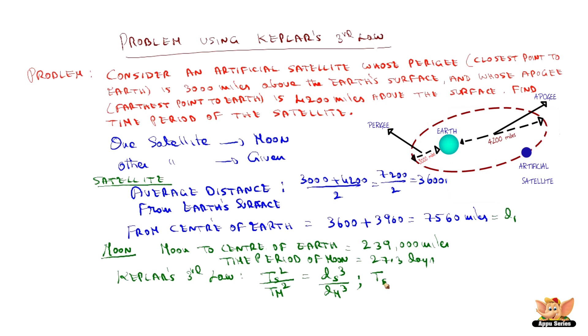what we will get? Ts square is equal to, what is the ds? That's of the satellite, 7560 whole cube divided by 239000 whole cube into 27.3 square. This gives rise to, when it is actually calculated, it gives us 236 into 10 to the power minus 4 and Ts is equal to square root of this, which will be 3.69 hours.